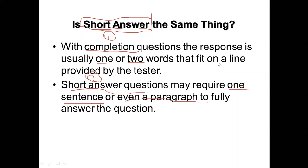A definition can be a short answer. If you ask questions like 'explain,' those are short answer questions. When you look at a completion, the blank space can be placed anywhere — whether at the beginning, in the middle, or at the end. Oteria has a question: what about questions that start with 'how' — do they fall under short answers or completion? A student responds that 'how' questions fall under short answers because they require a bit of explanation, unlike completion.